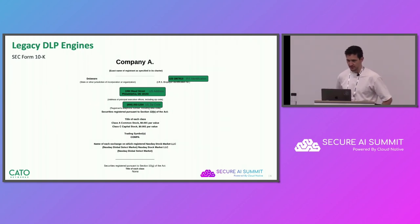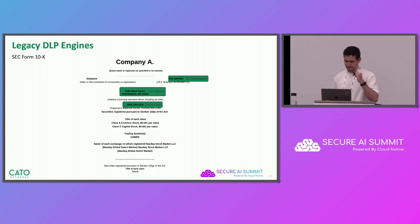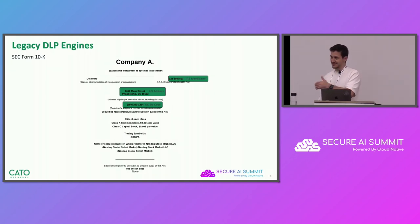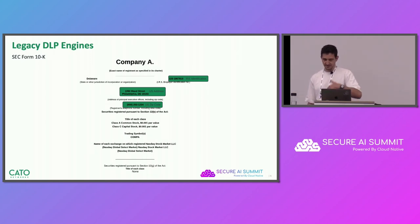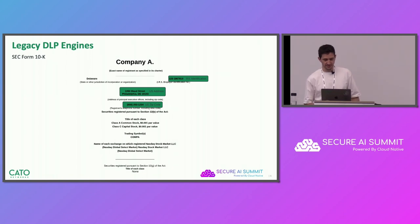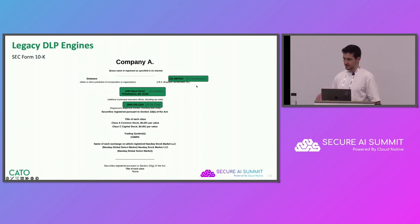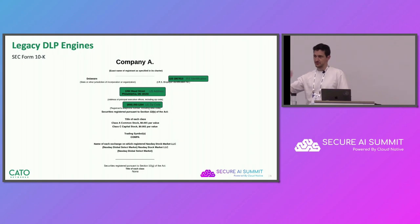Let's show how a legacy DLP solution detects a sensitive 10K form. A 10K form is a financial report that public companies release once a year to their shareholders — a sensitive document you might want to protect from data misusage, for example if it's being sent before its release date. Here, legacy DLP engines will do a good job because we have PIIs: an IRS identification number and the company's address. So if we create a DLP policy rule that blocks documents with the company's name and an IRS identification number, this will actually work pretty well.